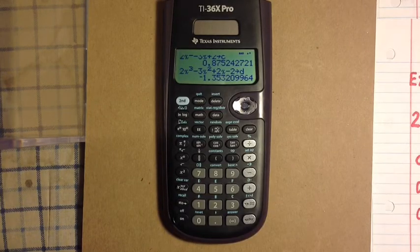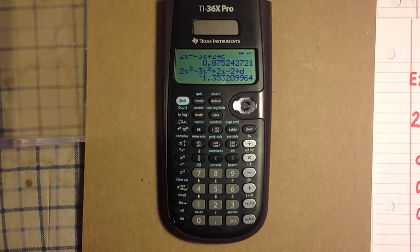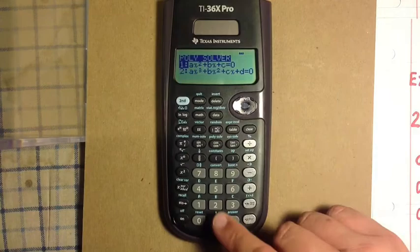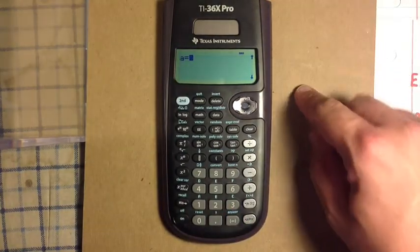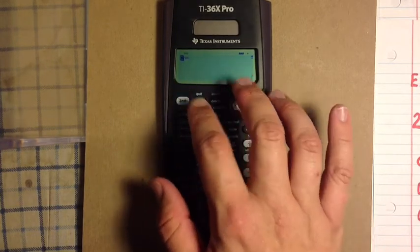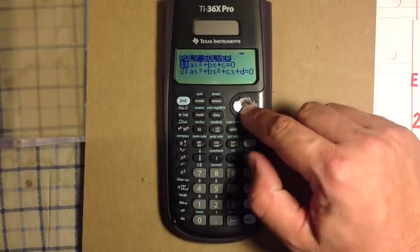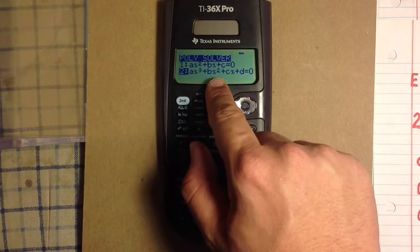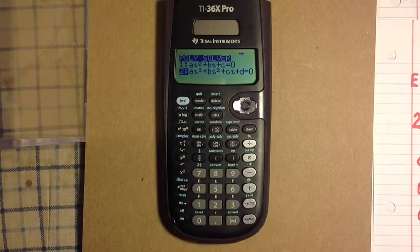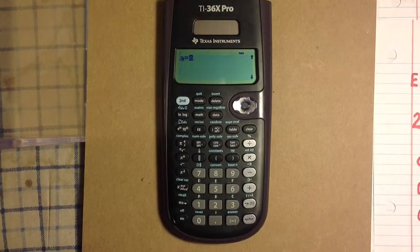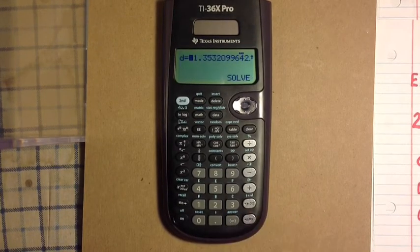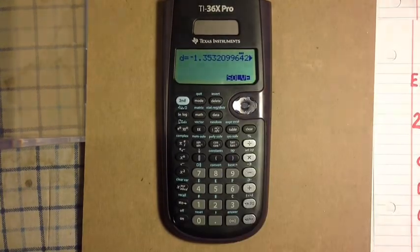I'm going to go ahead and go into the polynomial solver, which is accessed by hitting 2nd and the cosine key. Select option 2, and note one of the benefits of storing the proper variables. Note that you have A x cubed plus B x squared plus C x plus D equals 0. And the calculator takes the values from A, B, C, and D. So I can just hit enter, enter one more time, enter one more time, once more. Solve as highlighted. Press enter.